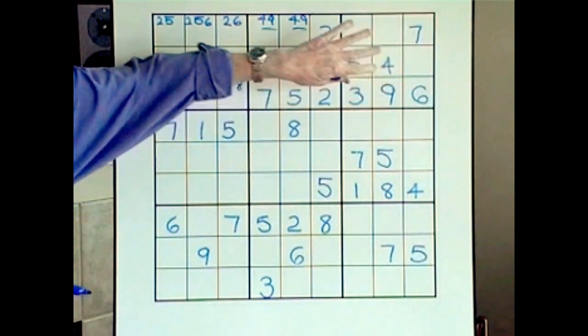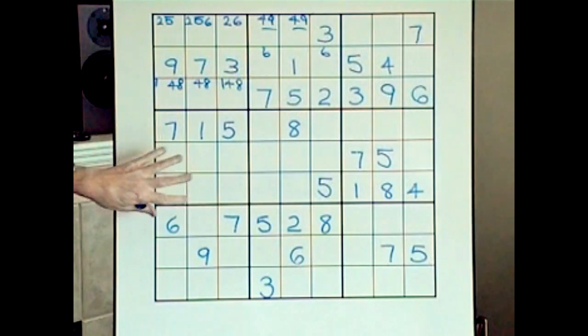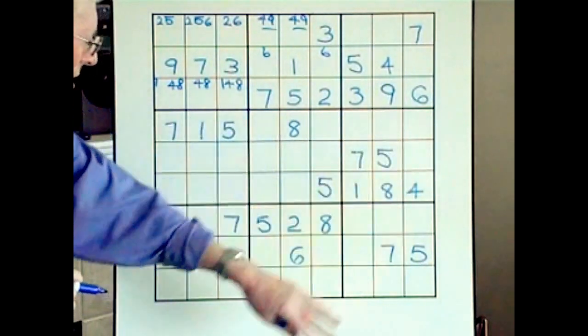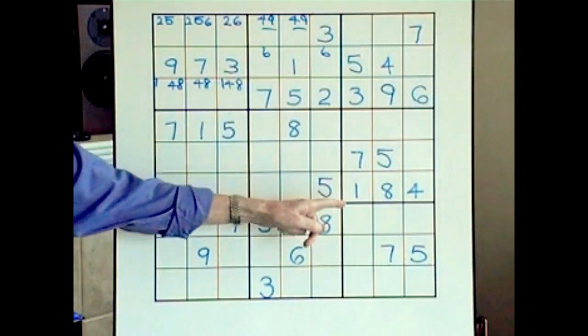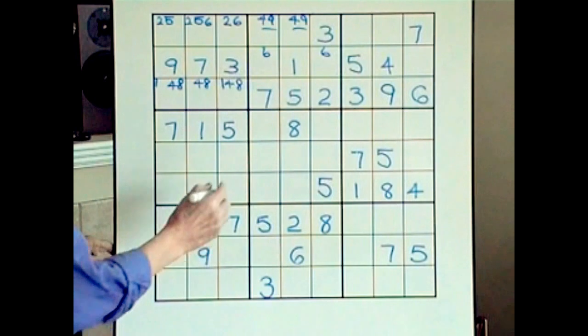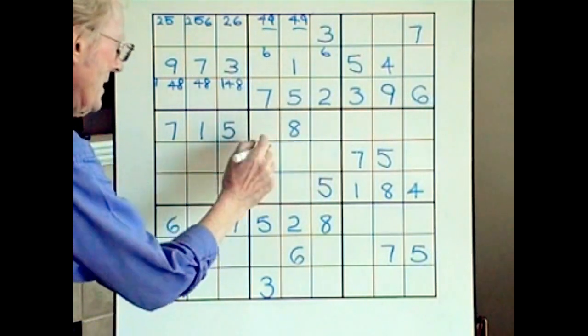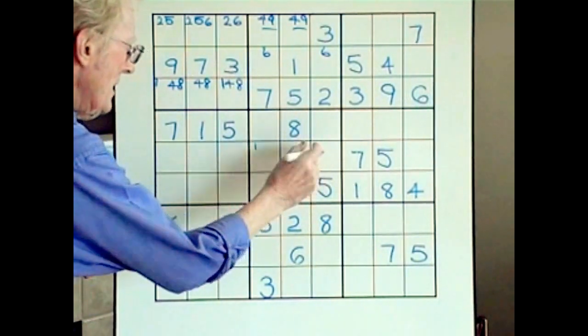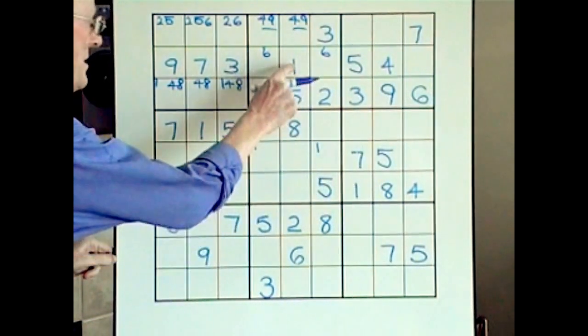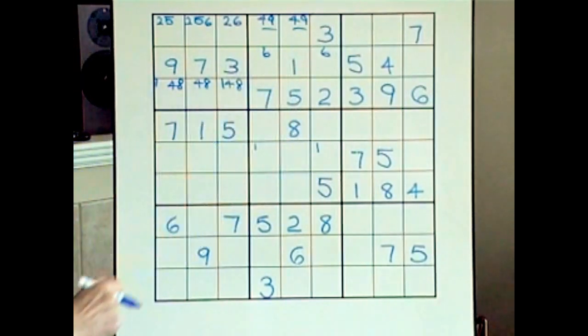Now we're going to do these middle horizontal blocks. For ones, we have two ones — a top and a bottom — so in here we can have a one in the middle, but we can't have a one there because of that one.